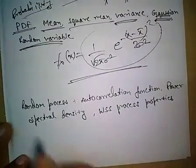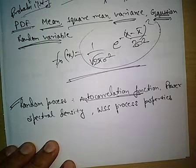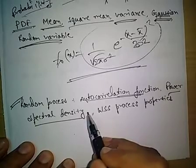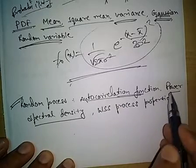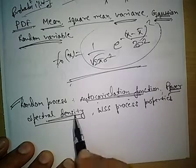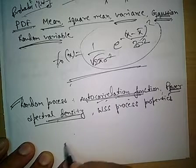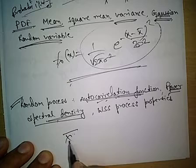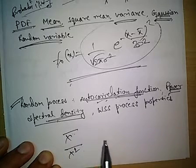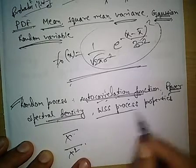The next topic is random process. The autocorrelation function of a random process is asked frequently in previous exams. The relation between power spectral density and autocorrelation function is key — the Fourier transform of the autocorrelation function gives the power spectral density. Using properties of autocorrelation function and PSD, we can find out the DC mean value and the AC power.